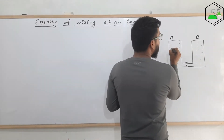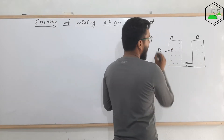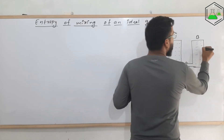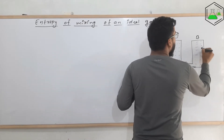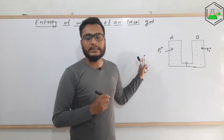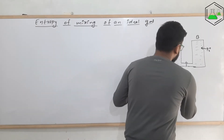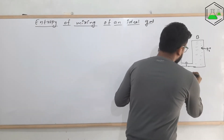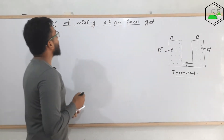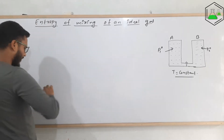The initial pressure of gas A is p1 naught and the initial pressure of gas B is p2 naught. To prove this, the temperature must be kept constant. This is the figure we use to prove the mixing of ideal gases.